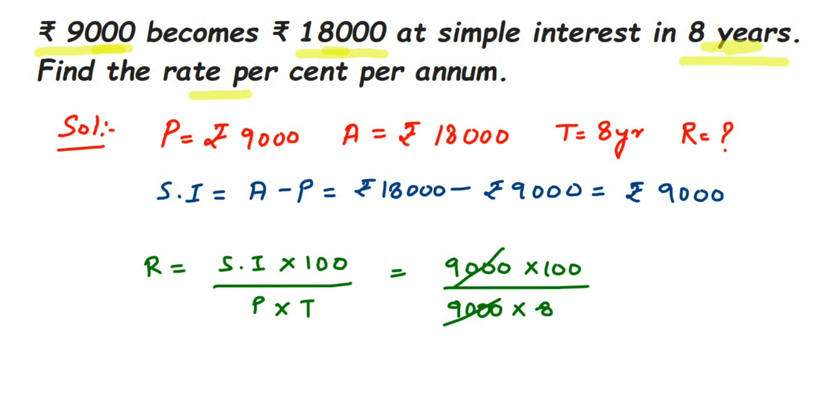We can cancel this. In the 4 table, 4 twos are 8, and 4 twenty-fives is 100. You can cancel this in the 2 table—it's completely up to you. I've directly cancelled this in the 4 table. So this is equal to 25 upon 2 percentage, or when you convert this into a mixed fraction, this will be 12 and 1/2...